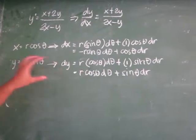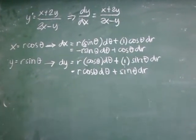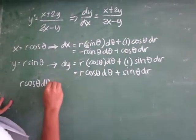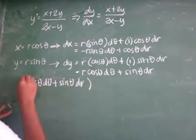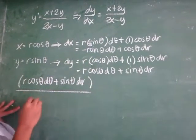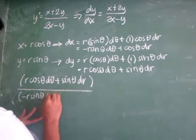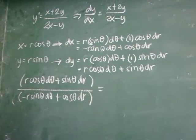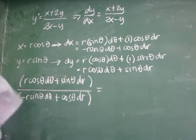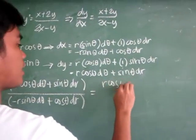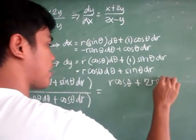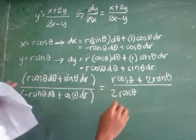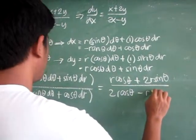All we need to do is substitute all these values into the original equation. So we have dy equal to r cosine theta d theta plus sine theta dr, over dx equal to negative r sine theta d theta plus cosine theta dr. And we substitute x and y into the right-hand side: r cosine theta plus 2r sine theta, all over 2r cosine theta minus r sine theta.